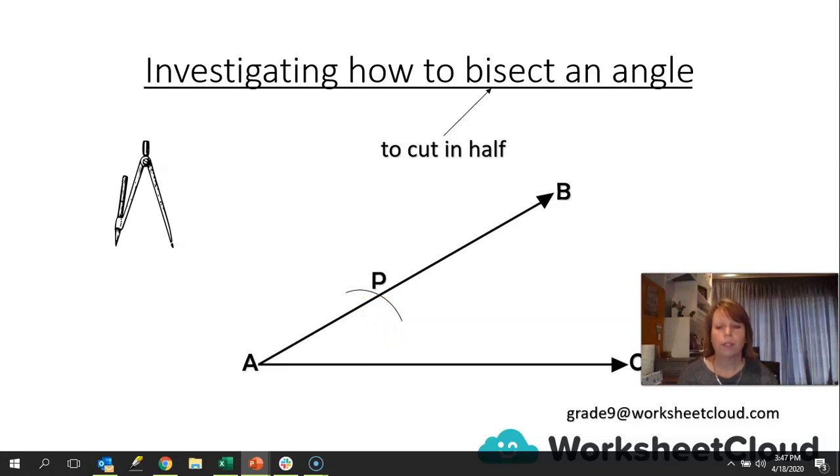So the arc will cut the line AB and we will name that point P. The next thing, we will use the point of our compass again, the same distance apart, and we will draw an arc on AC and we will label that Q.